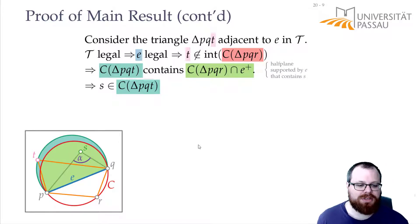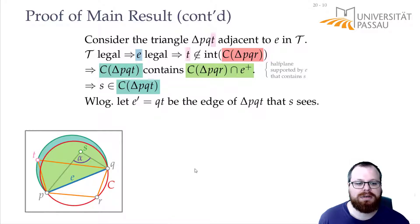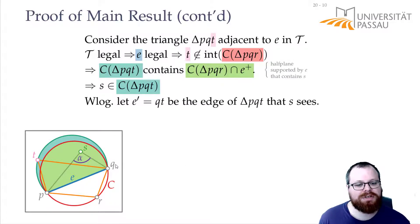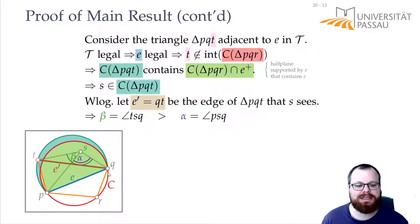So we have triangle PQT and vertex S that lies in its circumcircle. We again pick the edge of this triangulation that is closest to S, and this is now edge E' between Q and T. If we look at the angle between T, S, and Q — call this angle beta — this has to be larger than angle alpha between P, S, and Q.